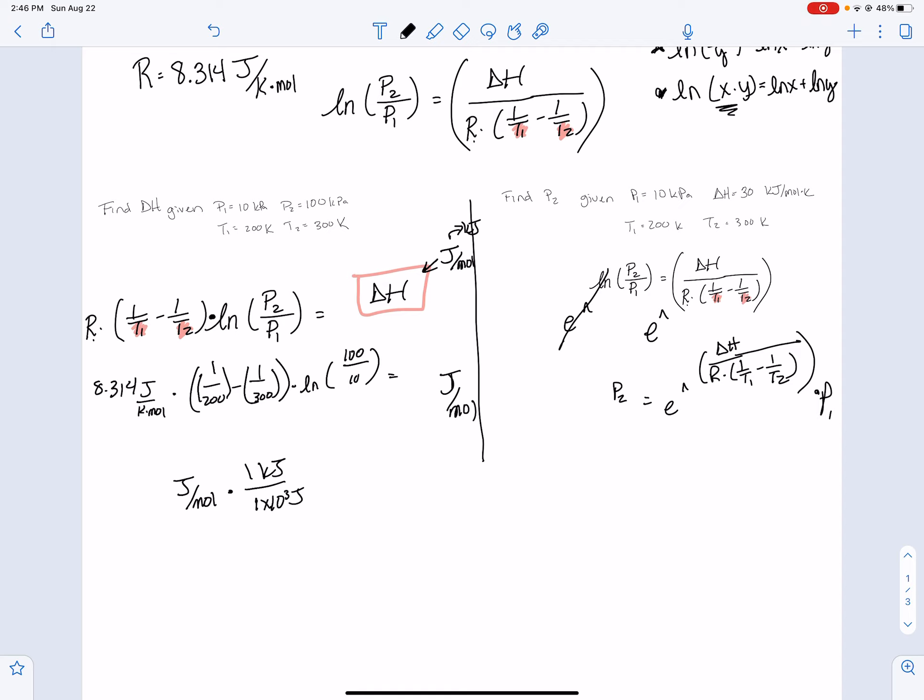Now, on the other side, if we have to solve for something different, like P2, E raised to the, and you just have to make sure this is all in that parentheses and that you've got a lot of parentheses going on with your calculator. So this is 30 kilojoules per mole.